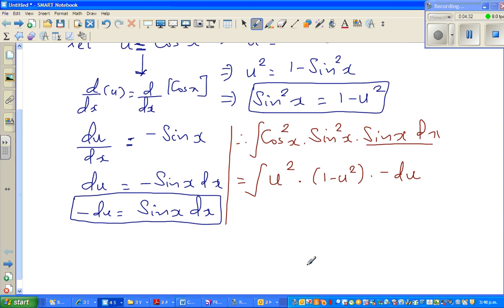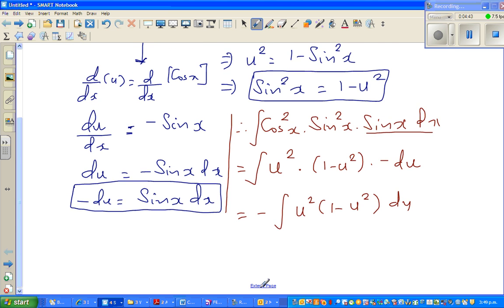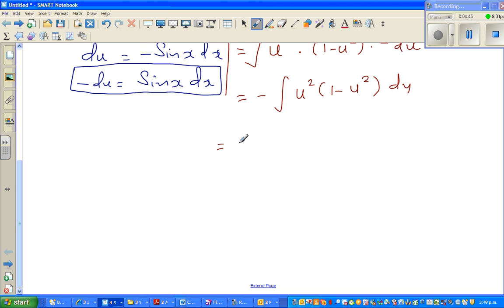So I can factor out this minus. So this is minus integration of u squared times 1 minus u squared du. So this is integration of, expanding this, u squared minus u to the power 4 du.